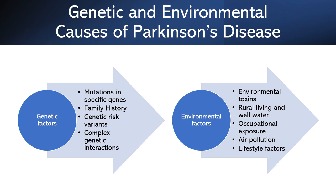Let's look at genetic and environmental factors involved in Parkinson's disease. Some of the key genetic factors include gene mutations. Mutations in certain genes have been identified to be associated with Parkinson's disease. These mutations disrupt the normal functioning of proteins involved in various cellular processes, leading to an increased risk of the disease. If a close family member, such as a parent or sibling, has been diagnosed with Parkinson's disease, the risk of developing the condition is higher. Certain genetic variants have also been associated with an increased risk and may be more common in certain populations or ethnic groups.